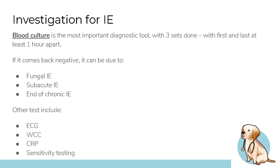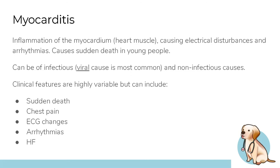Investigations for infective endocarditis: blood culture is the number one main investigation. Three different blood cultures are performed, with the first and last done at least one hour apart. Even if all come back negative, the patient may still have IE — this can occur with fungal IE, subacute IE, or chronic infective endocarditis. Other investigations include ECG, CRP, and others, but blood culture remains primary.